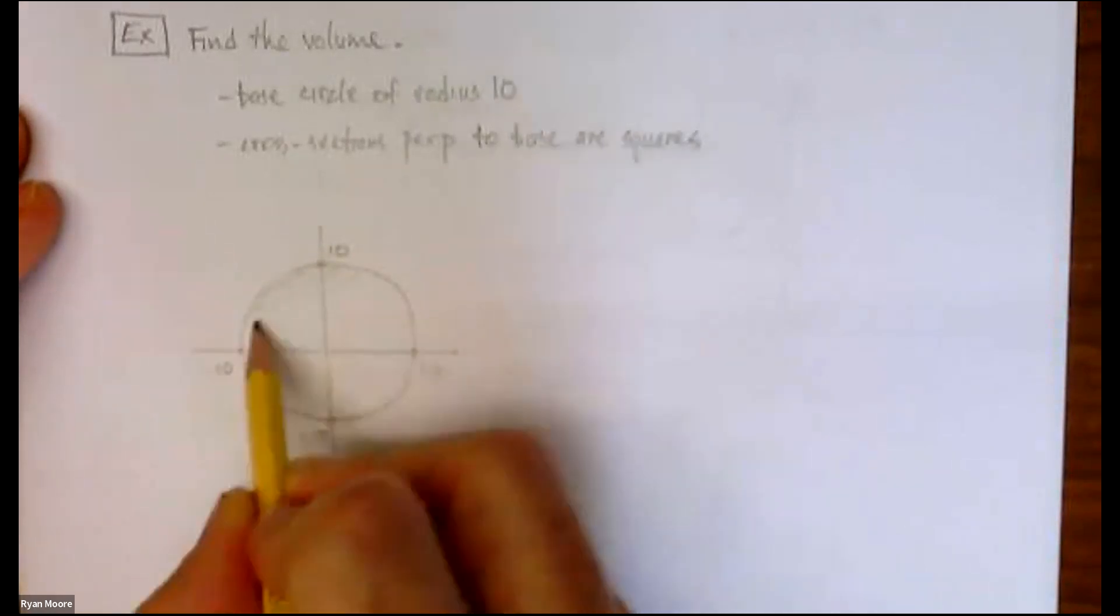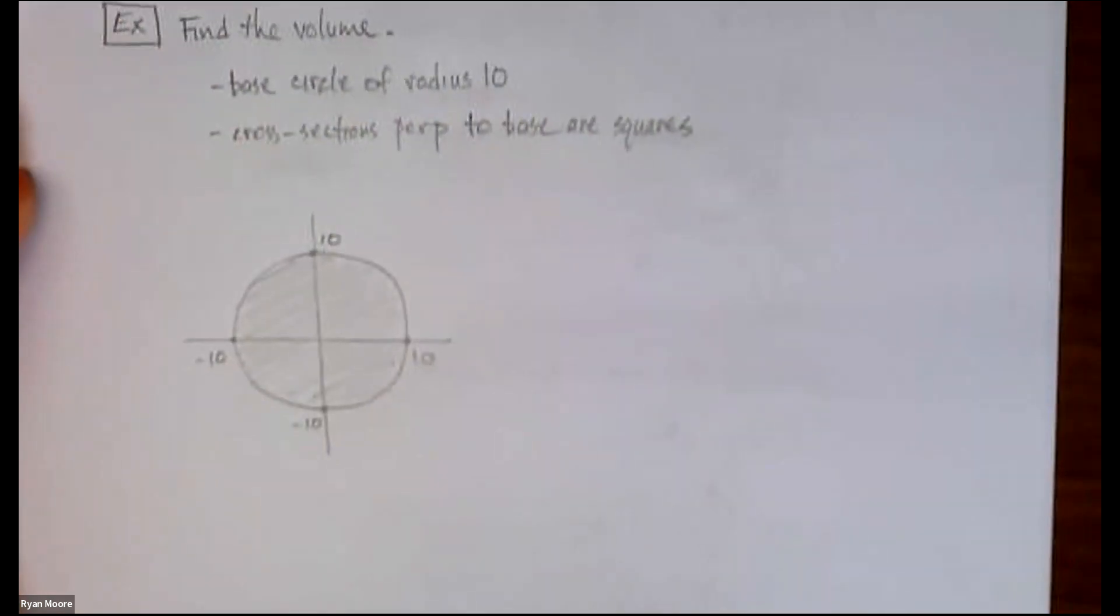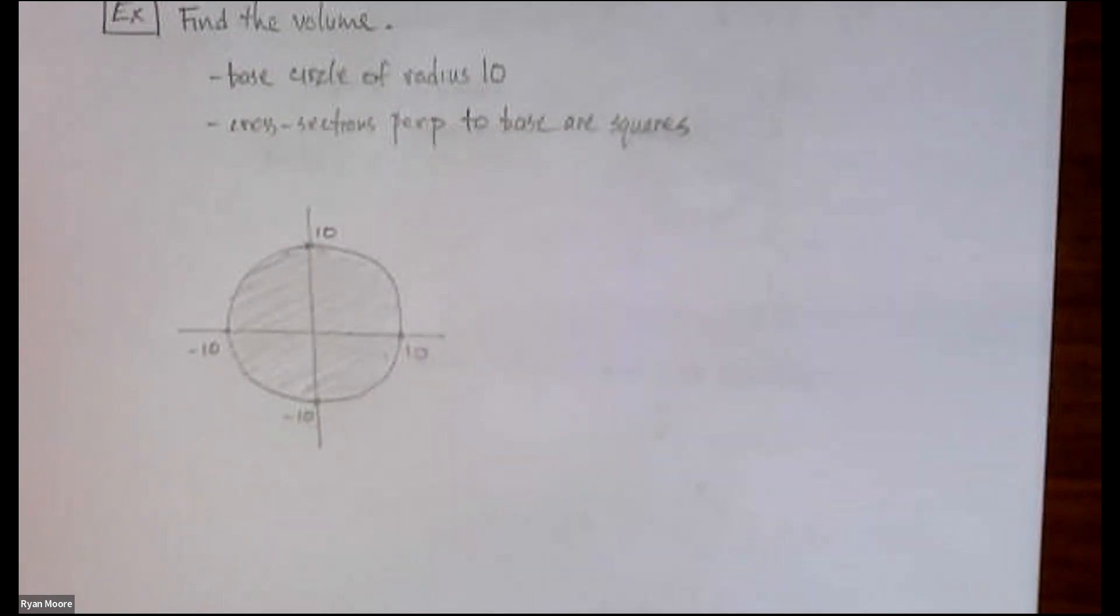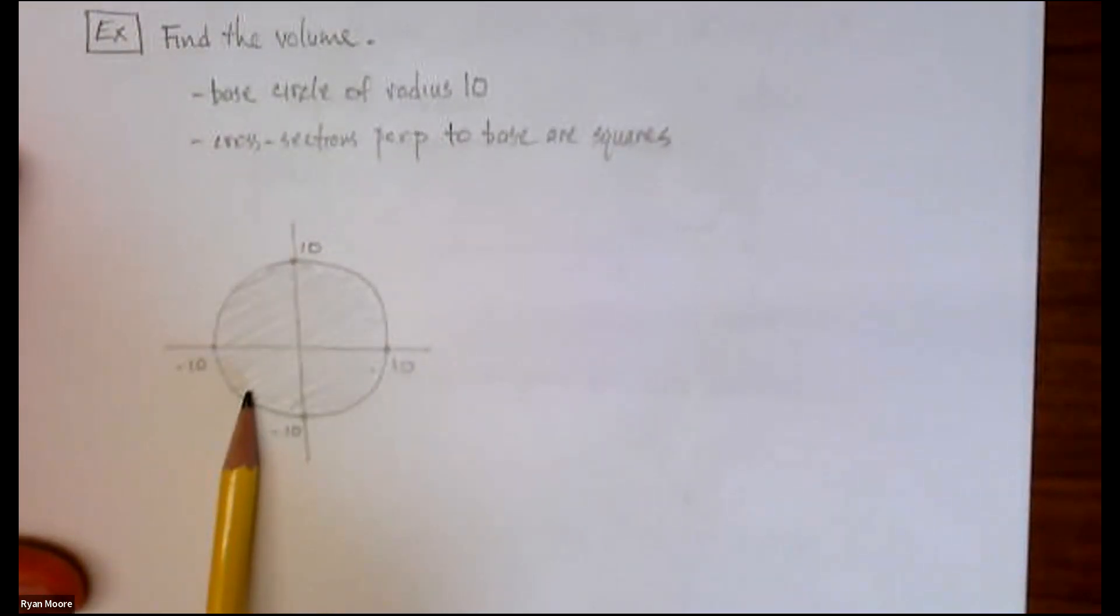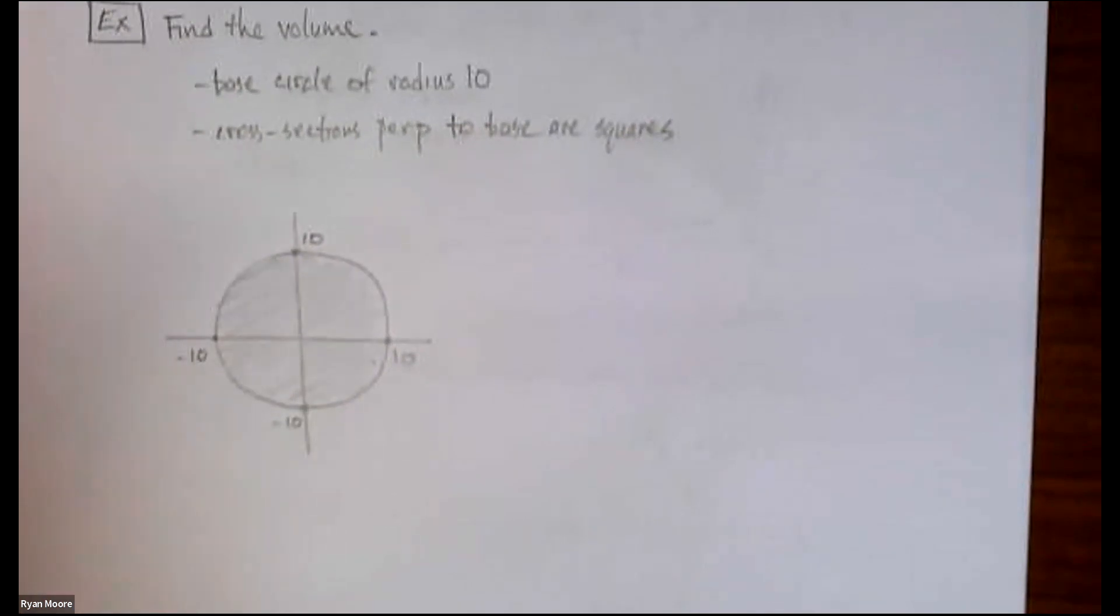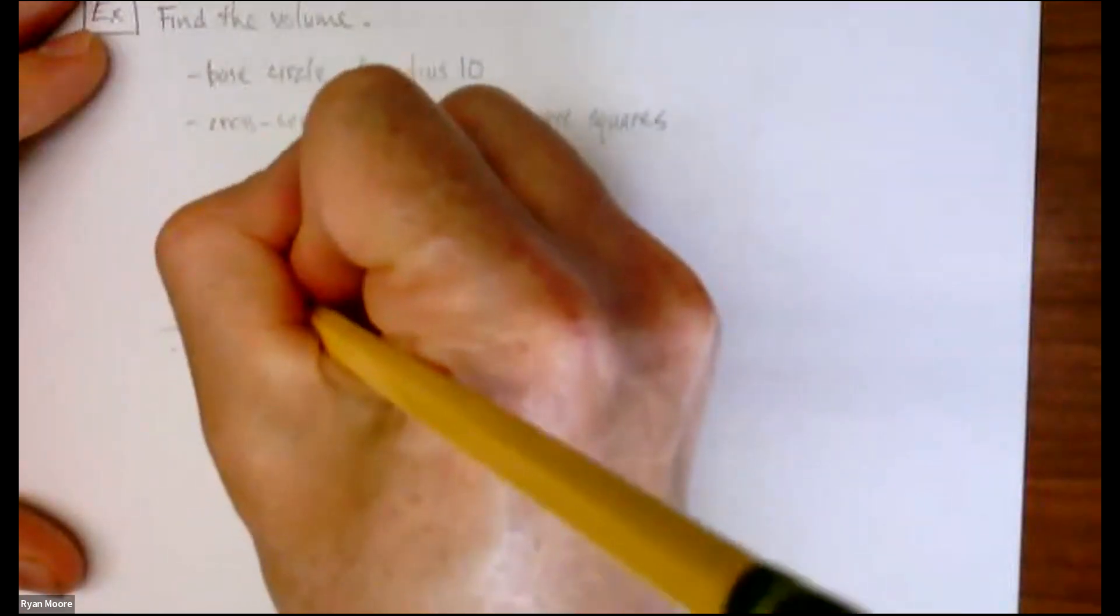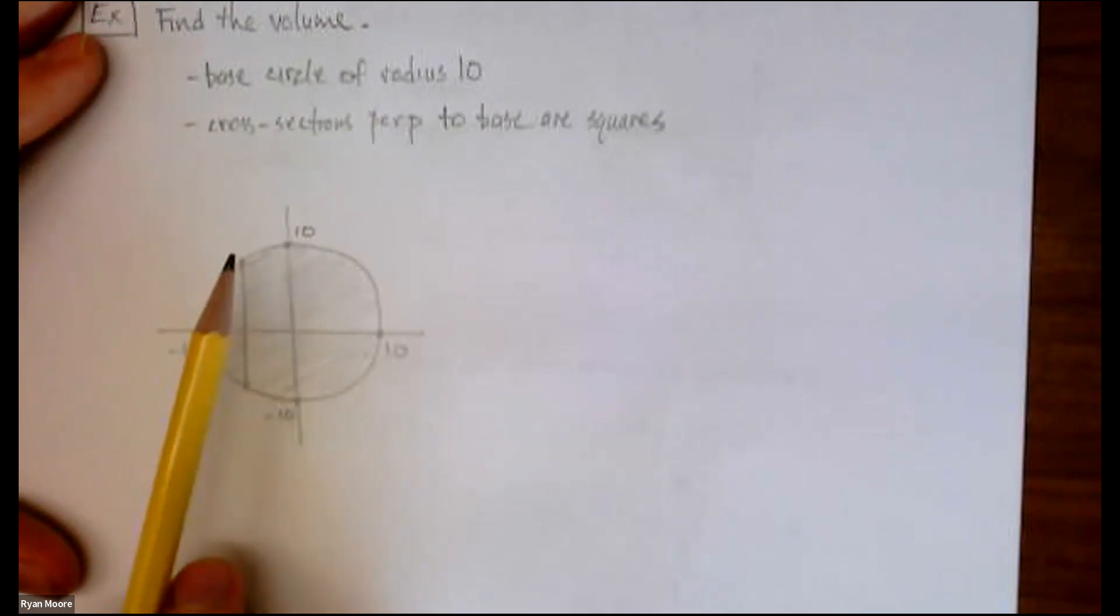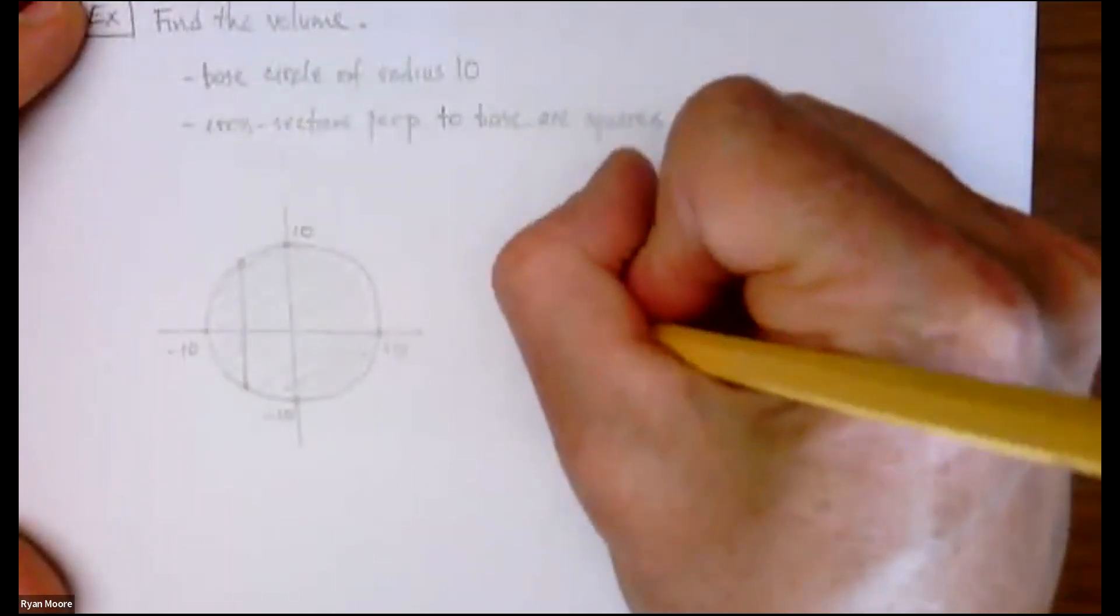If I shade it in, here's the base, might even think of that like a region right inside that circle. So what's going on with these cross sections? It says cross sections perpendicular to the base are squares. So if this is laying flat then the squares are sticking up off the page. What would one edge of a square look like? Well, we could orient that edge any way we'd like but I think the easiest thing to do is just draw it here perpendicular to the x-axis. So this is like the edge of a square and we'll take that same length and come up off the page and create a square. I'm also going to draw this square on the side.